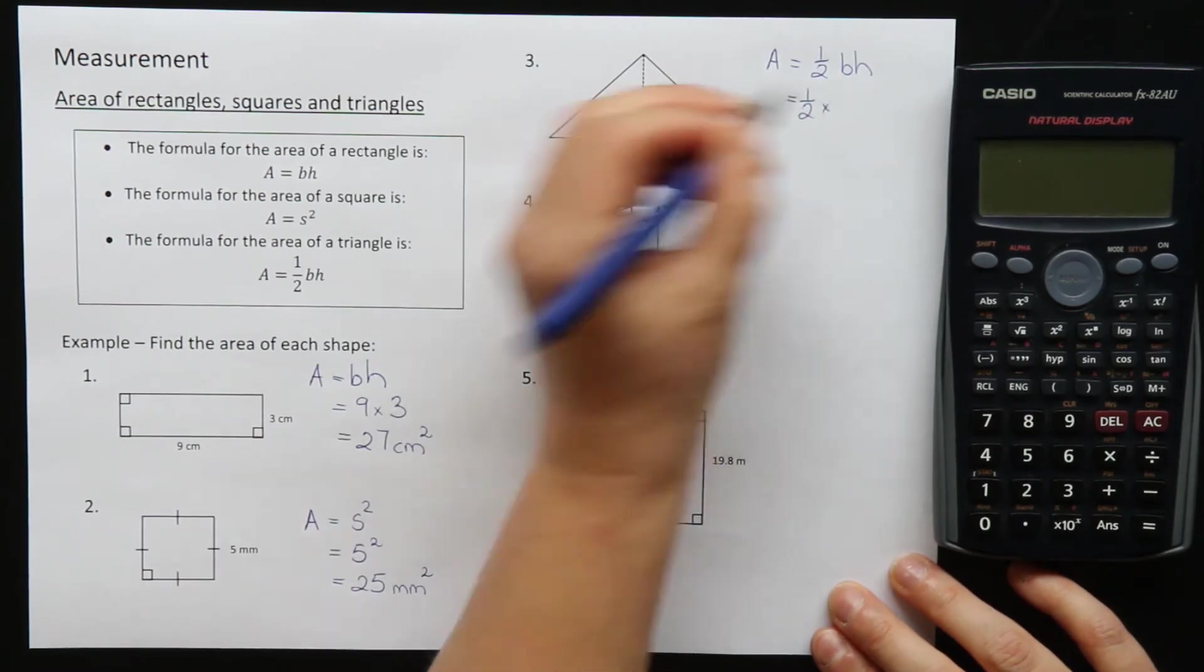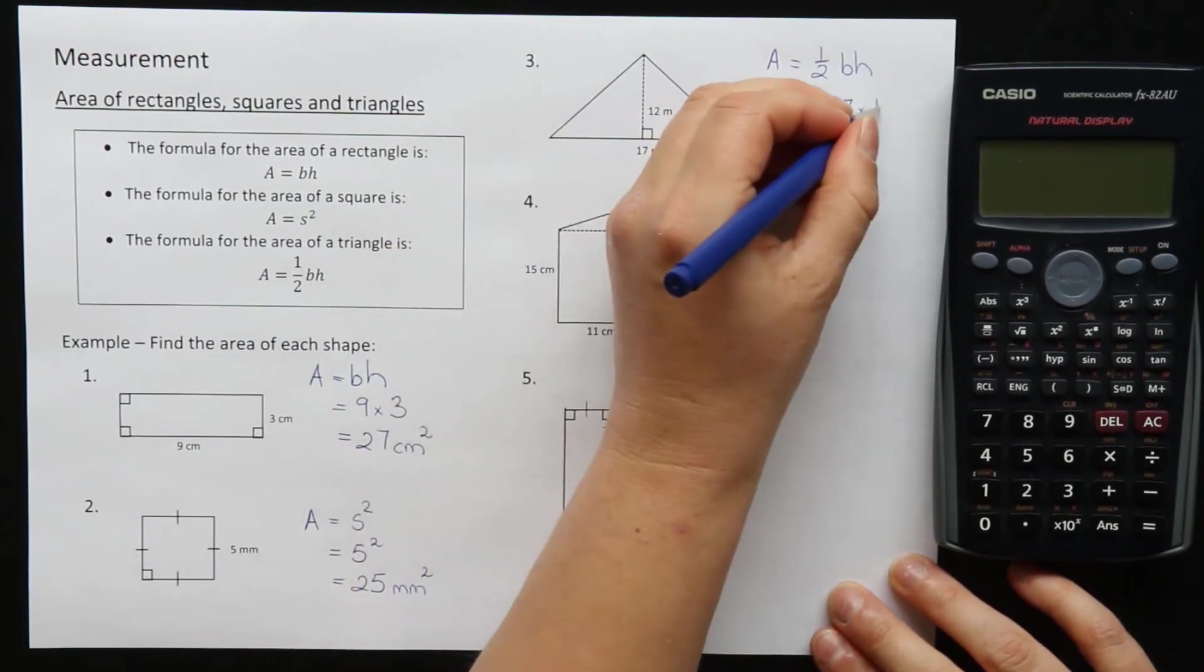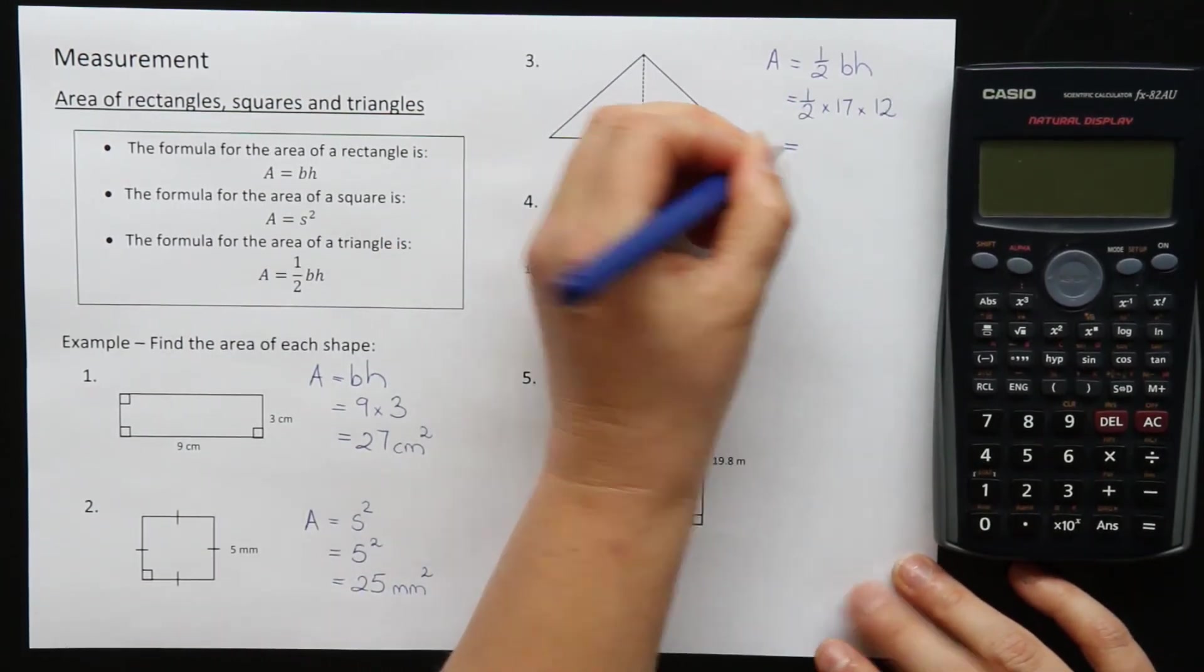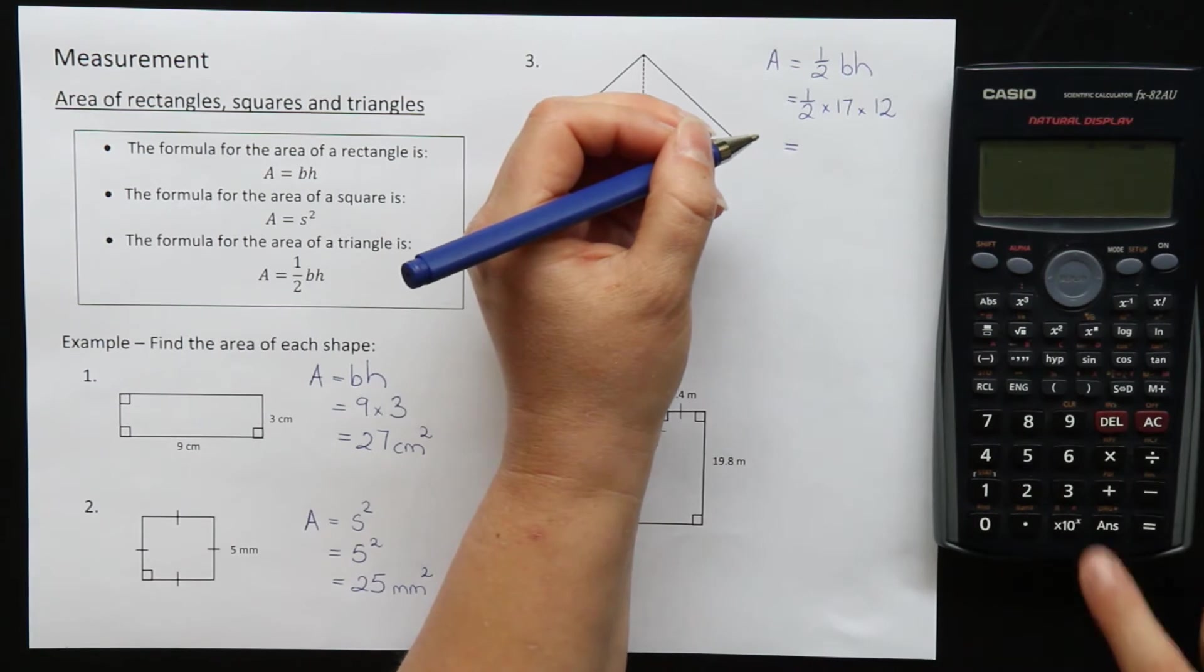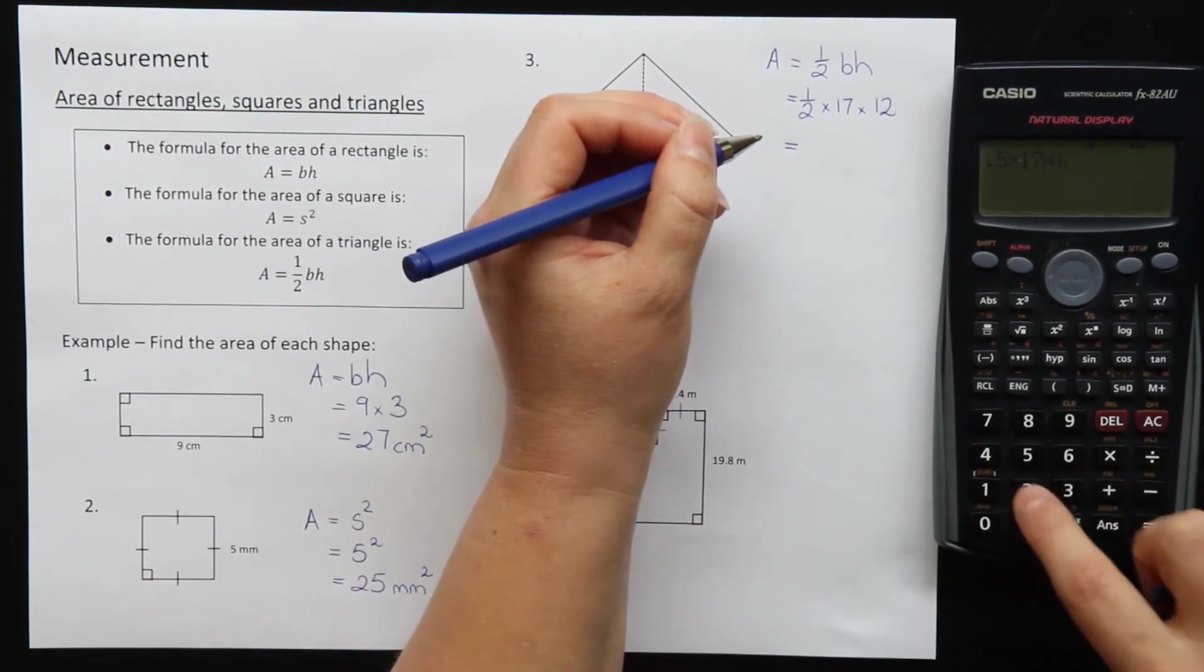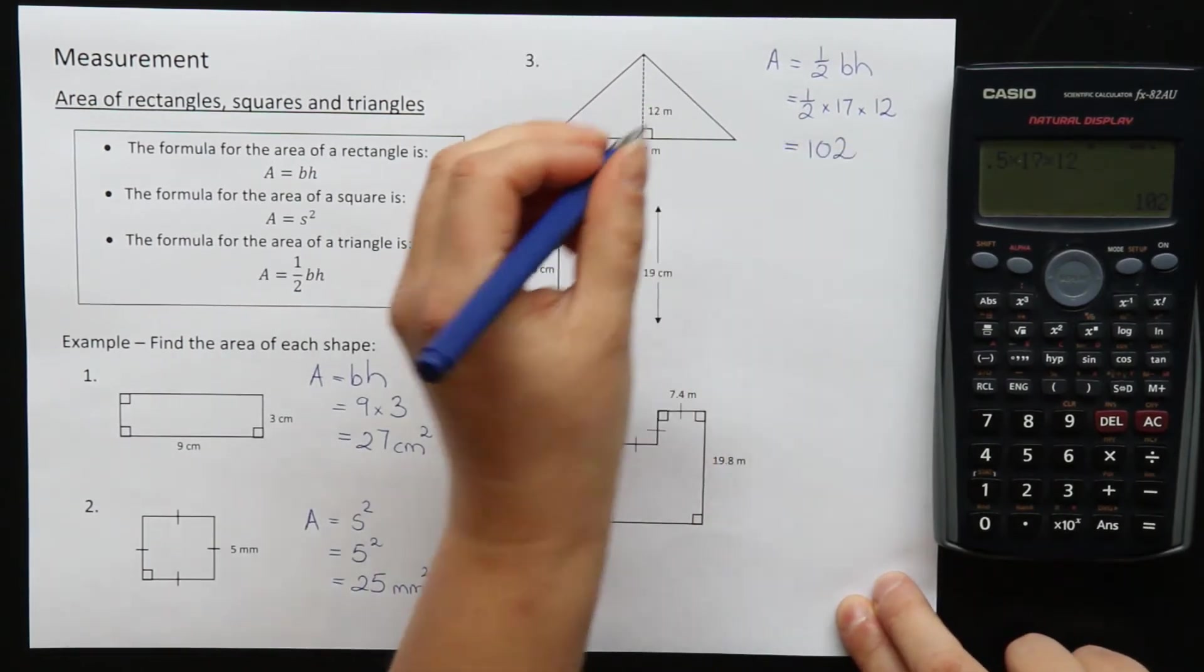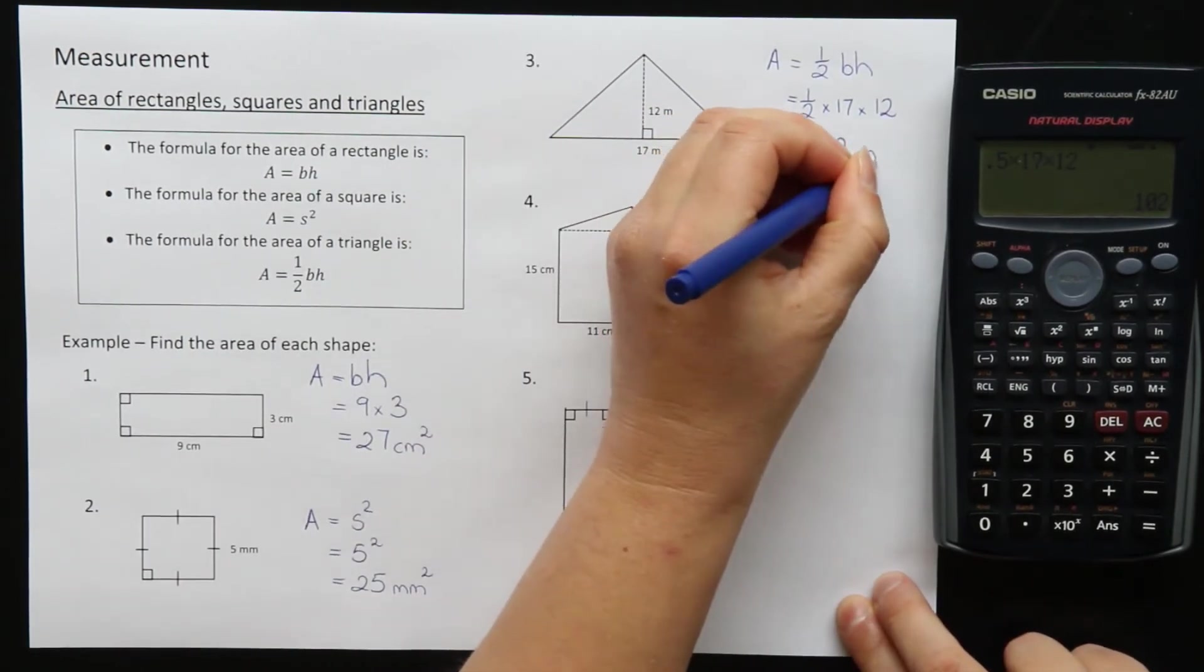So for my triangle, half my base is 17 times my height, which is 12. That's not really a timetable that we know, so let's use our calculator. Half times 17 times 12 is equal to 102. The units are meters, so meters squared.